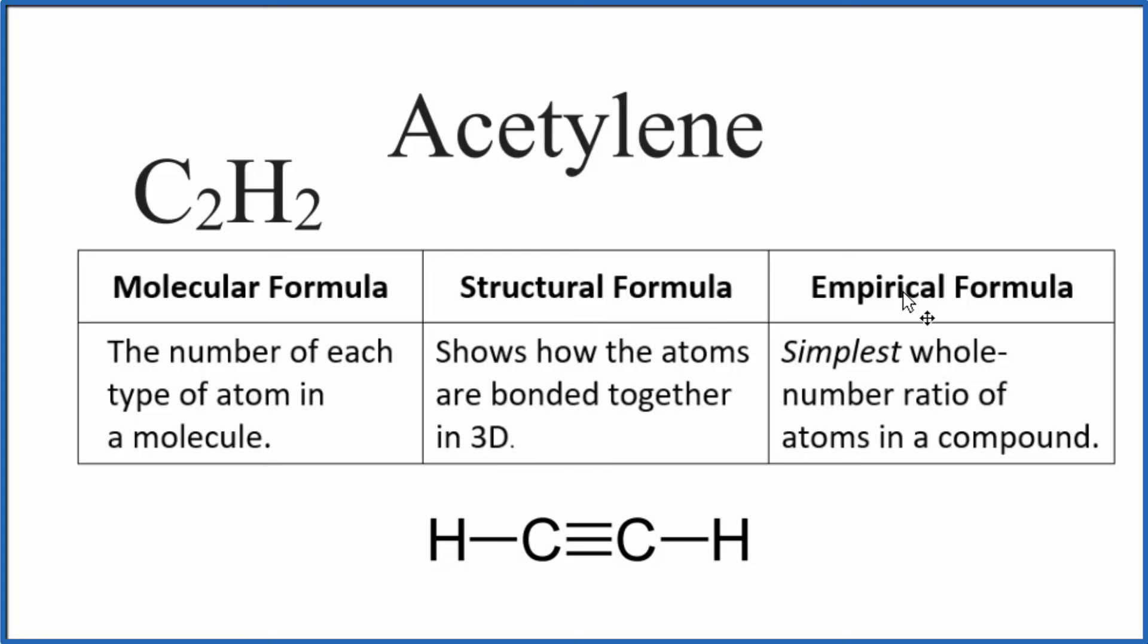The empirical formula, though, is the simplest whole number ratio of the atoms. Here we have two to two, but we could simplify that to just one to one. In effect, we divided both numbers by two. That gives us an empirical formula of C1H1, but we don't write the one by convention.